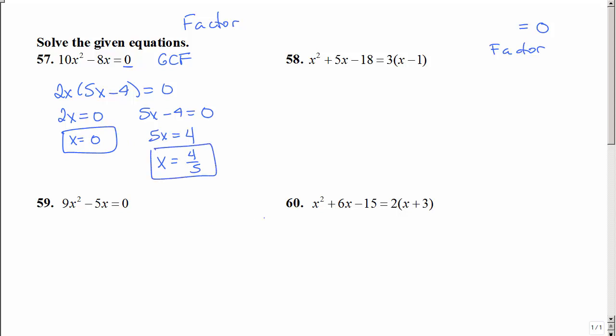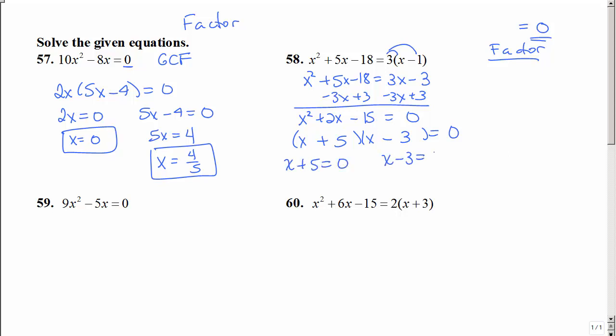So we have two solutions. Number 58 doesn't have that zero, so we're going to need to distribute. Then I'm going to subtract 3x and add 3 to get that all important zero. Then I can factor. So what multiplies to get 15 and adds to get 2, a positive 5 and a negative 3. Then set each factor equal to zero, and solve. And again, we have those two solutions.